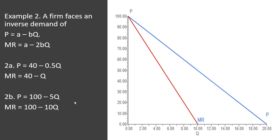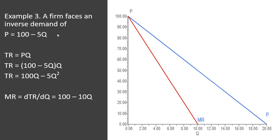Let's do example 3, but this time let's do it using some calculus. Example 3 is like 2B, but I'm just going to derive marginal revenue using calculus.